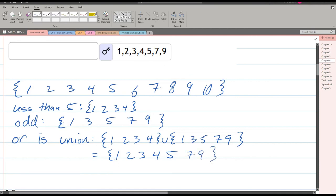So this is numbers less than 5 OR odd. They could be either less than 5 or they could be odd.